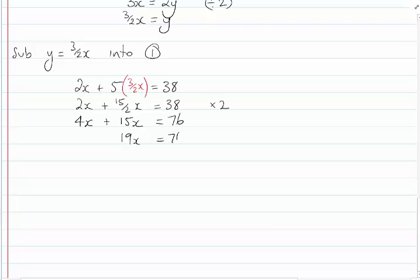19x equals 76. Divide by 19. And again, use the calculator to get x equals 4. Now I'm going to use that to substitute back into this equation, where I know what y is equal to in terms of x. y equals 3 over 2 times x, which equals 3 over 2 times 4, which equals 6.